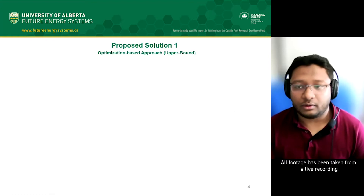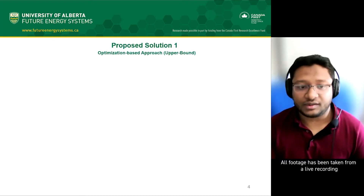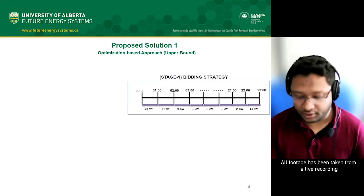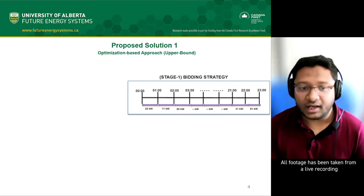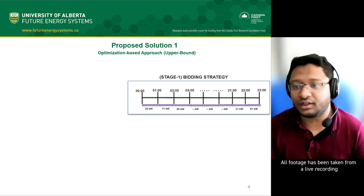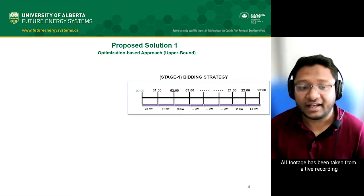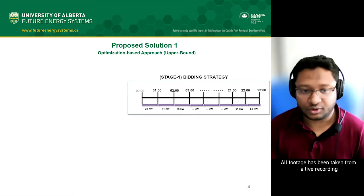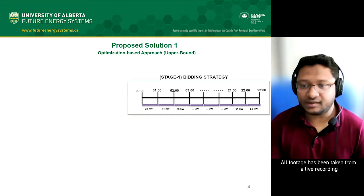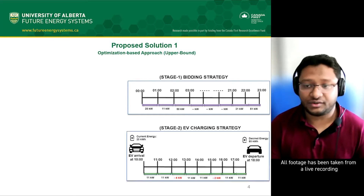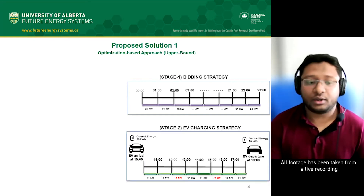Let me explain the bidding strategy first, which is the Stage 1 strategy. We have 24 hours of the day, and at each hour the prosumer places a certain energy bid, shown by the purple lines on the diagram. We also have the Stage 2 EV charging strategy.